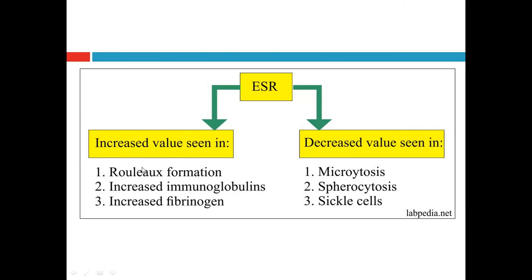Increased ESR is seen with RBC rouleaux formation, increased immunoglobulins in the plasma, and increased fibrinogen in the plasma. Decreased ESR is seen in microcytosis — meaning reduced size of RBCs, resulting in reduced MCV (mean corpuscular volume) — and in spherocytosis, where RBCs are shaped as spheres.